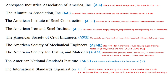ISO — the International Standards Organization — is the most important and most widely used standard. The ISO 9000 series is already widely used and very important. ISO also deals with quality control, vibration, shock, hand tools such as screwdrivers and pliers, abrasives, machine tools, mechanical transmission, and metrology.